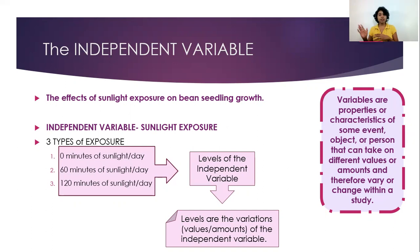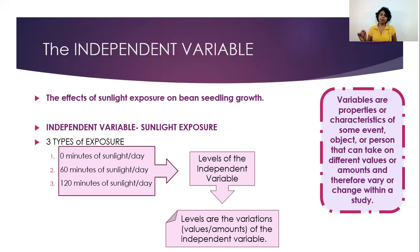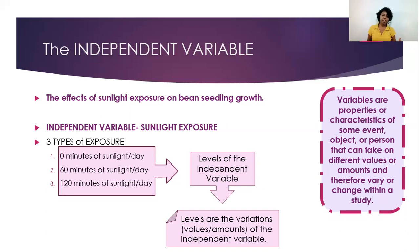The amount of sunlight the beans get — that is our independent variable. We decide we are giving one group of beans zero minutes. We are giving our next beans one hour. And the third beans, we give two hours of sunlight, which is 120 minutes — you add 60 plus 60. So we have three levels of the independent variable: the amount of sunlight the beans get. The amount of sunlight varies or changes in three ways, and these three changes, three variations, three amounts, we call the levels.